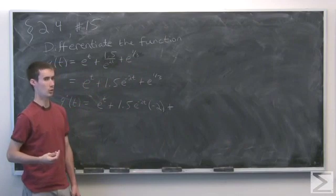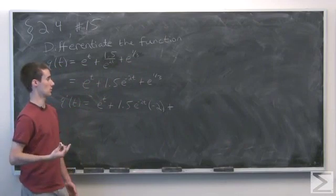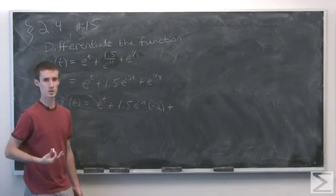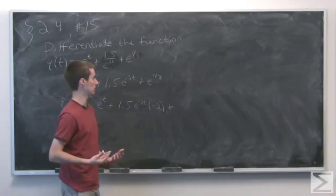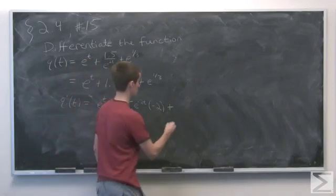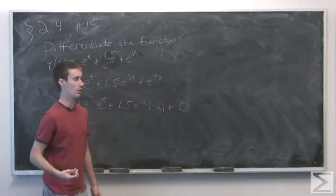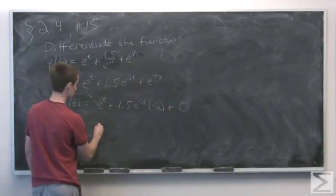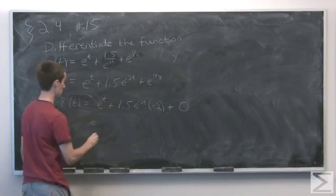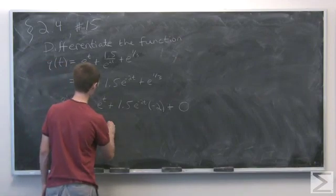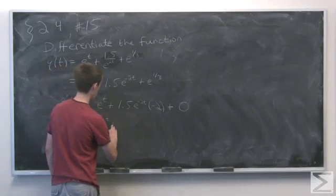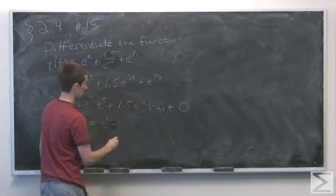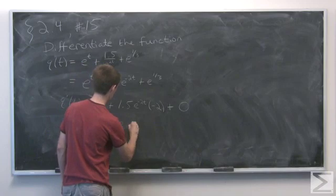And the third term, although it kind of looks like a variable because there's a letter there, remember the e is just a number. We're raising it to 1 third power. That's just going to be a constant, so the derivative of the third term is just 0. So if we simplify this a little bit, we see that q prime of t is e to the t minus 3e to the minus 2t.